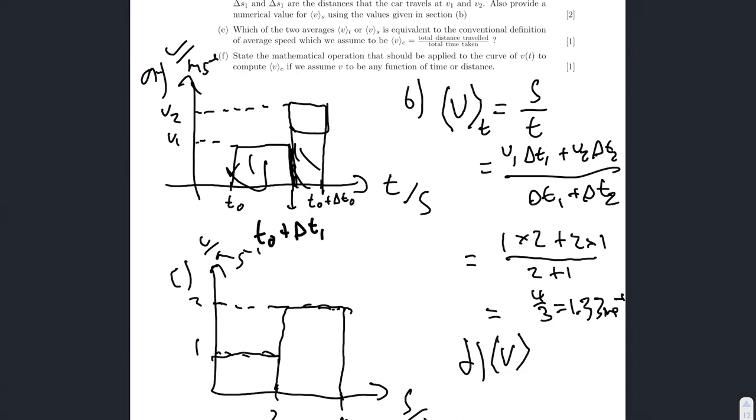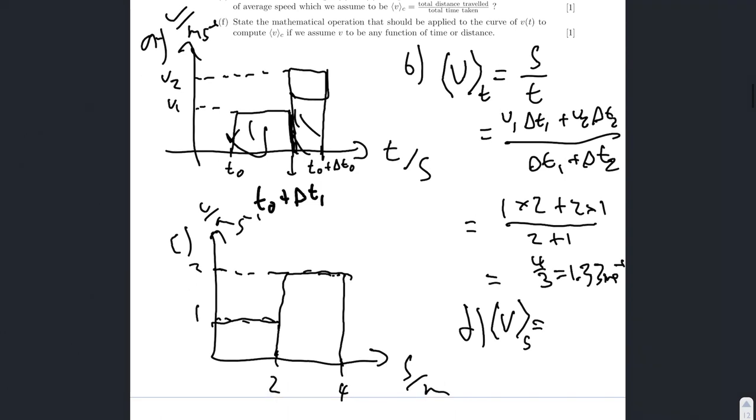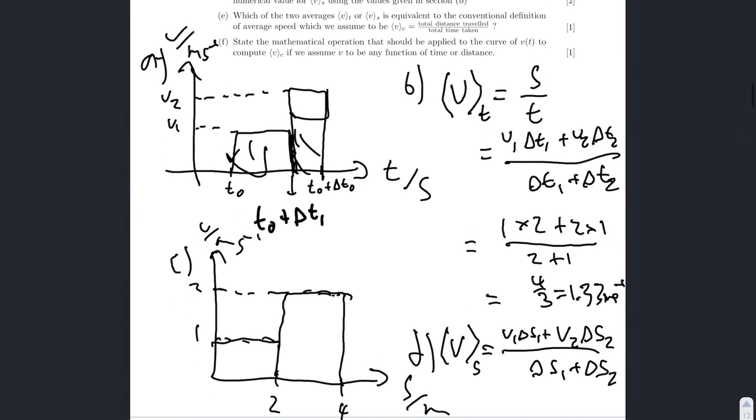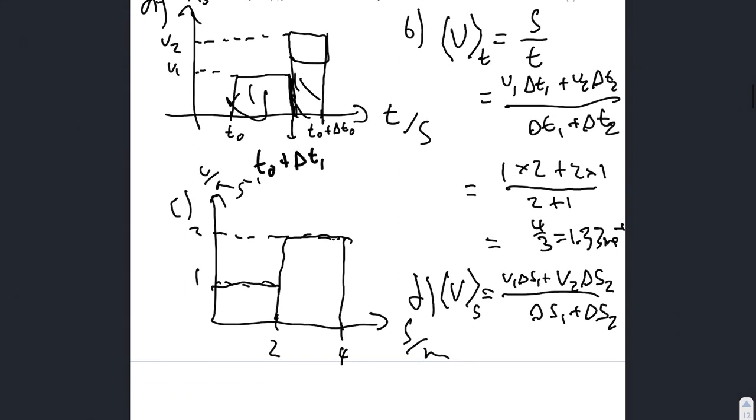So, we now have v of s, which equals v1 delta s1 plus v2 delta s2 over delta s1 plus delta s2. And they want us to provide the numerical value using the values before.